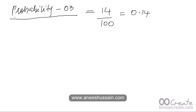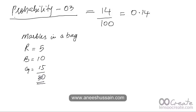Now we're going to take a step forward and discuss slightly more advanced concepts in probability. Let's go back to drawing marbles from a bag. Say you have 30 marbles in a bag broken up as 5 red, 10 blue, and 15 green, for a total of 30 marbles.